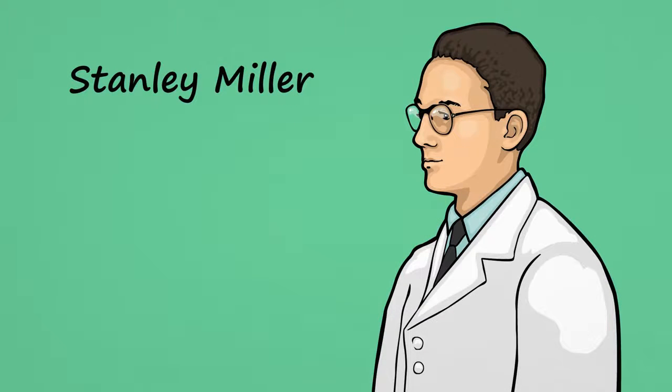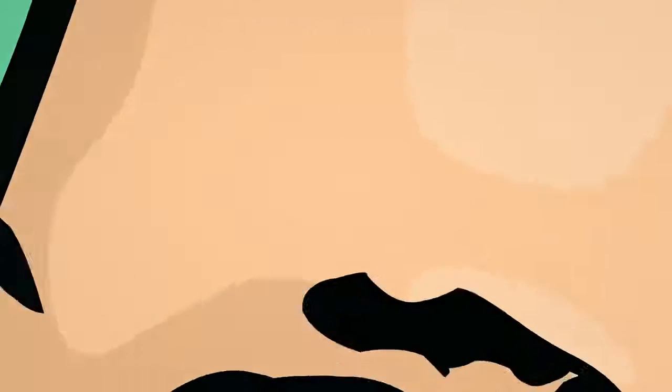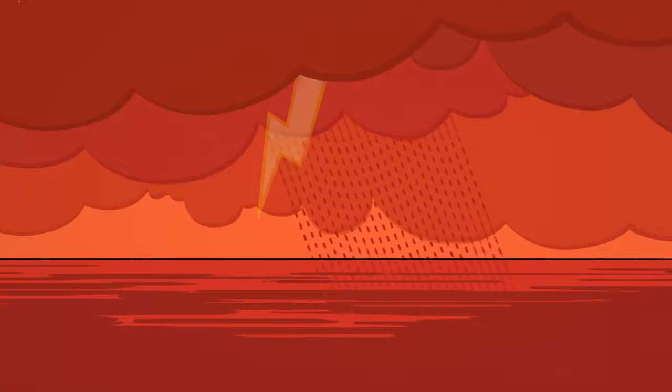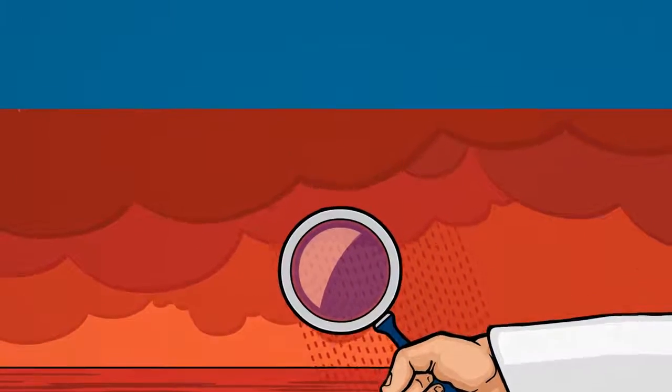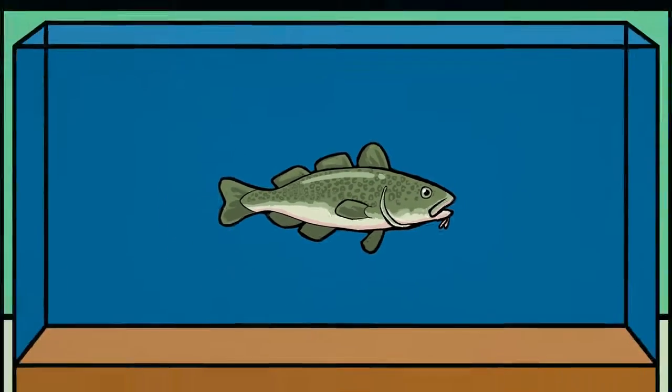In the 1950s, Stanley Miller, then a graduate student at the University of Chicago, came up with an idea. We could simulate early earth conditions in the lab and then carefully watch what happens. If you can't study fish in the sea, set up an aquarium.